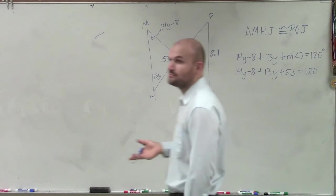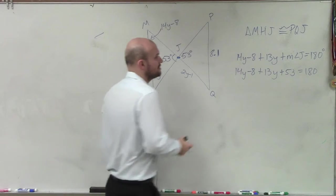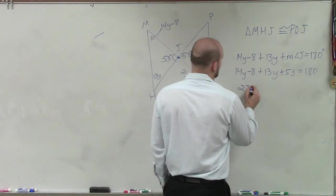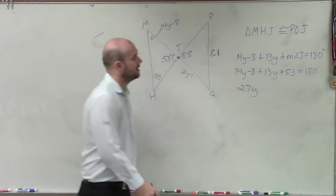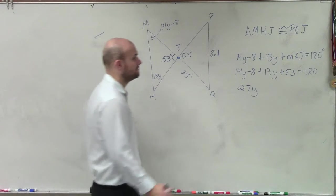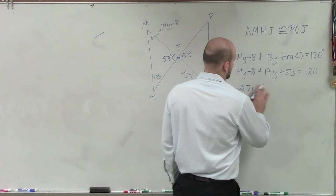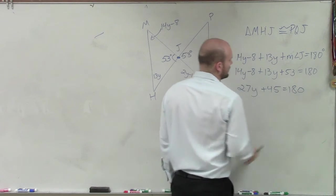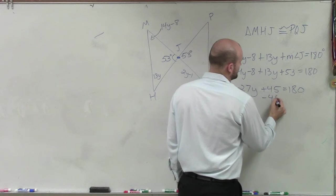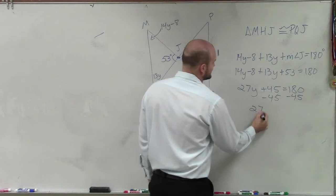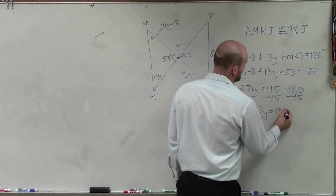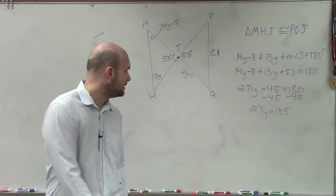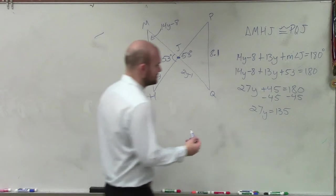So now I can say 14y minus 8 plus 13y plus 53 equals 180. So now I can just combine like terms and solve. So in this case, I have 14y plus 13y is going to be 27y. Negative 8 plus 53 is going to be positive 45, equals 180. Subtract 45. So I have 27y equals 135.